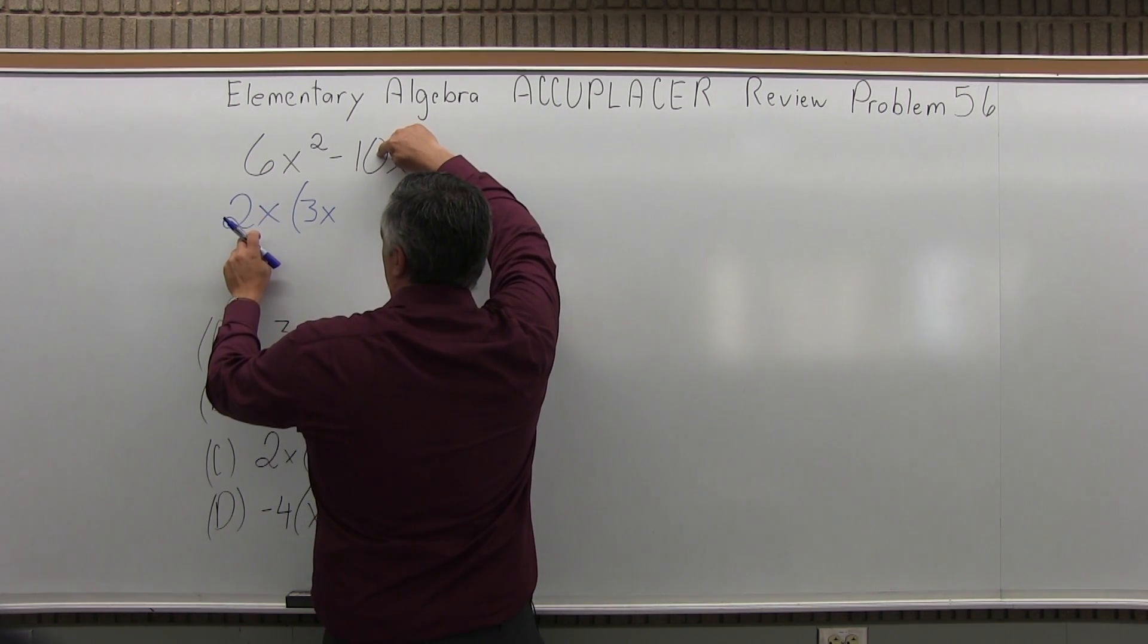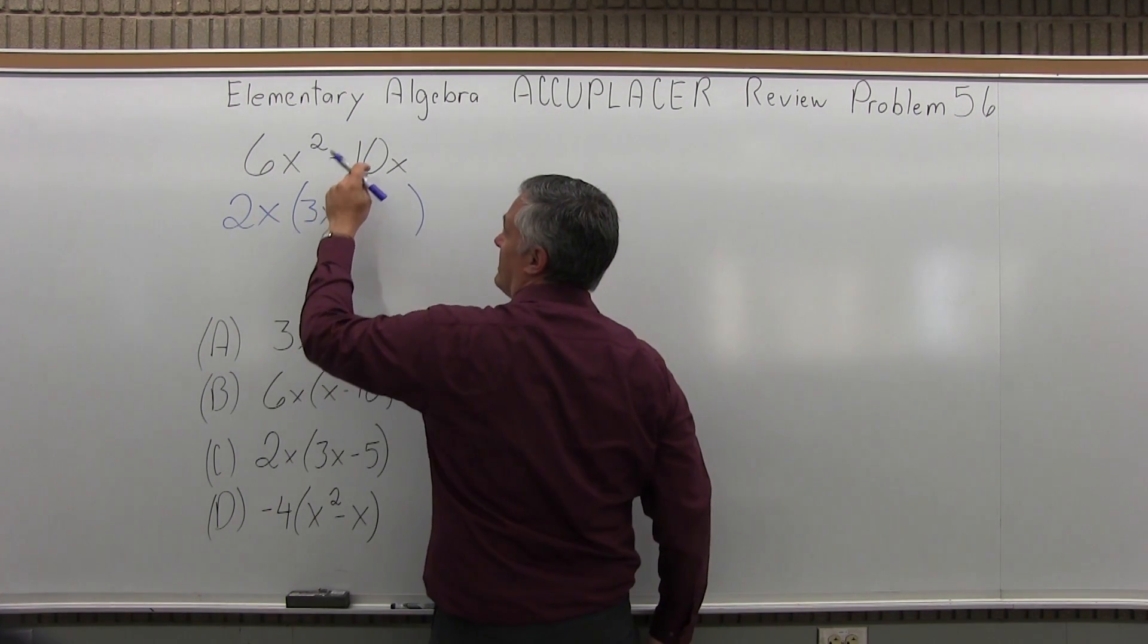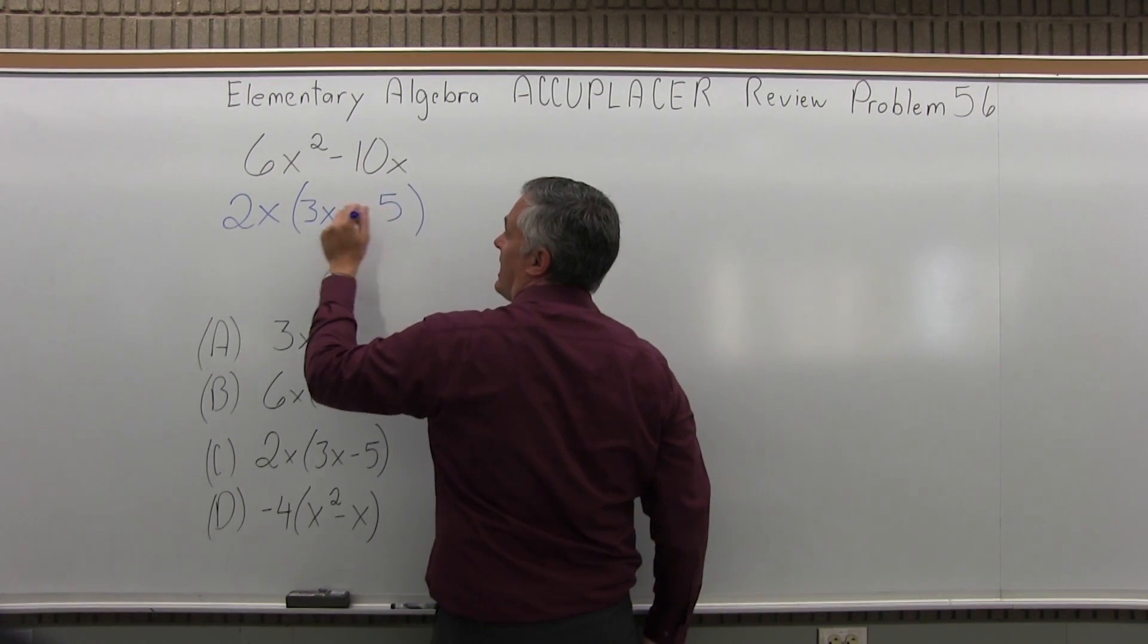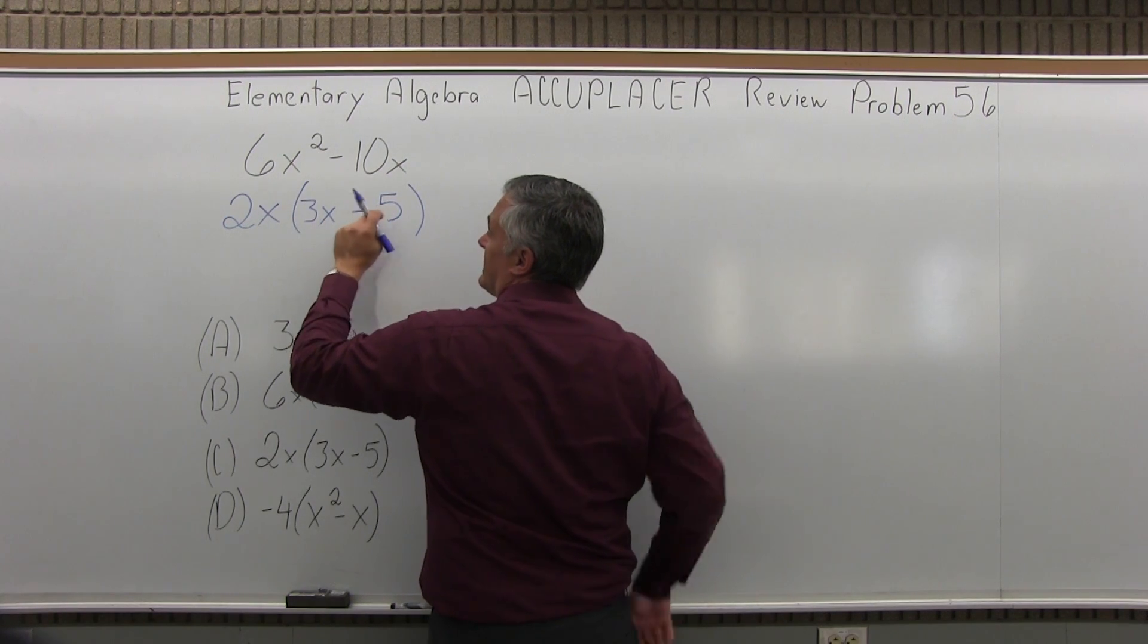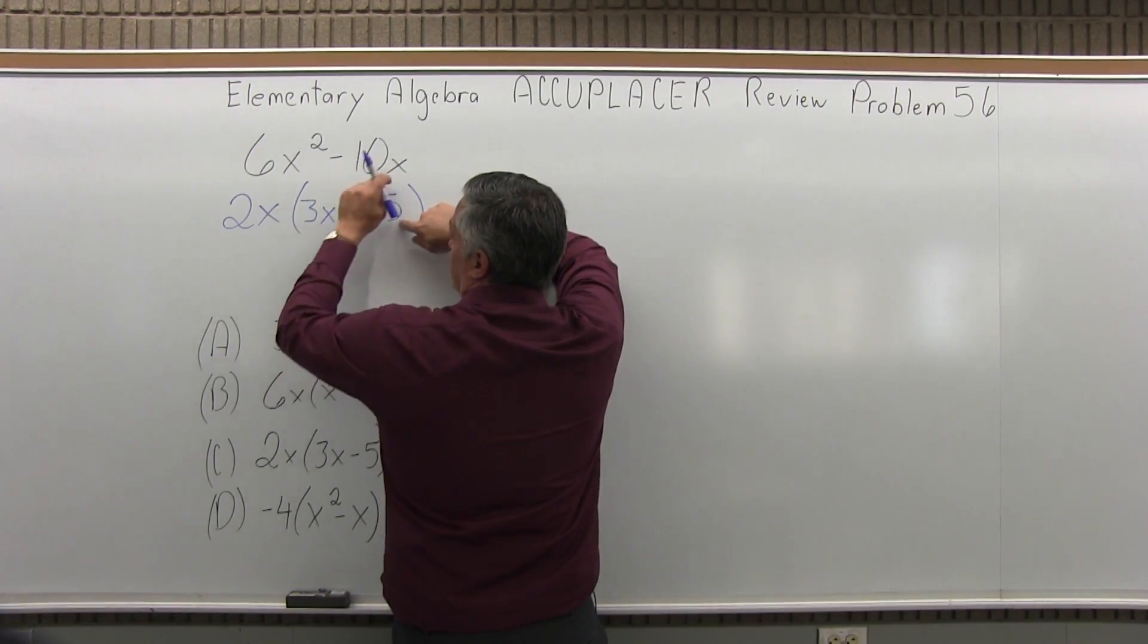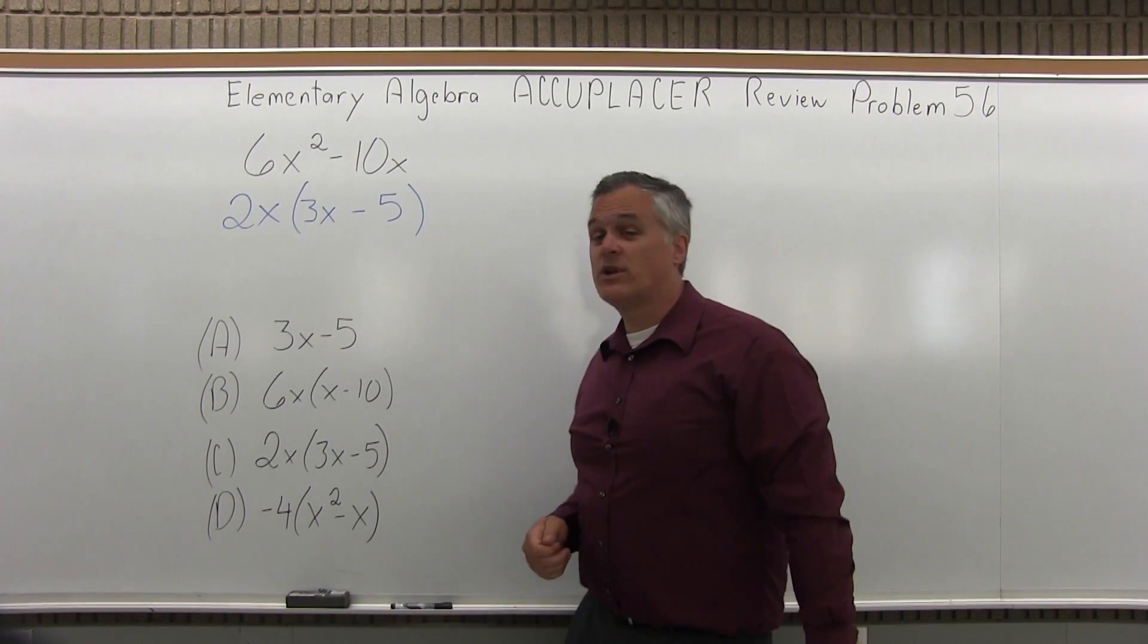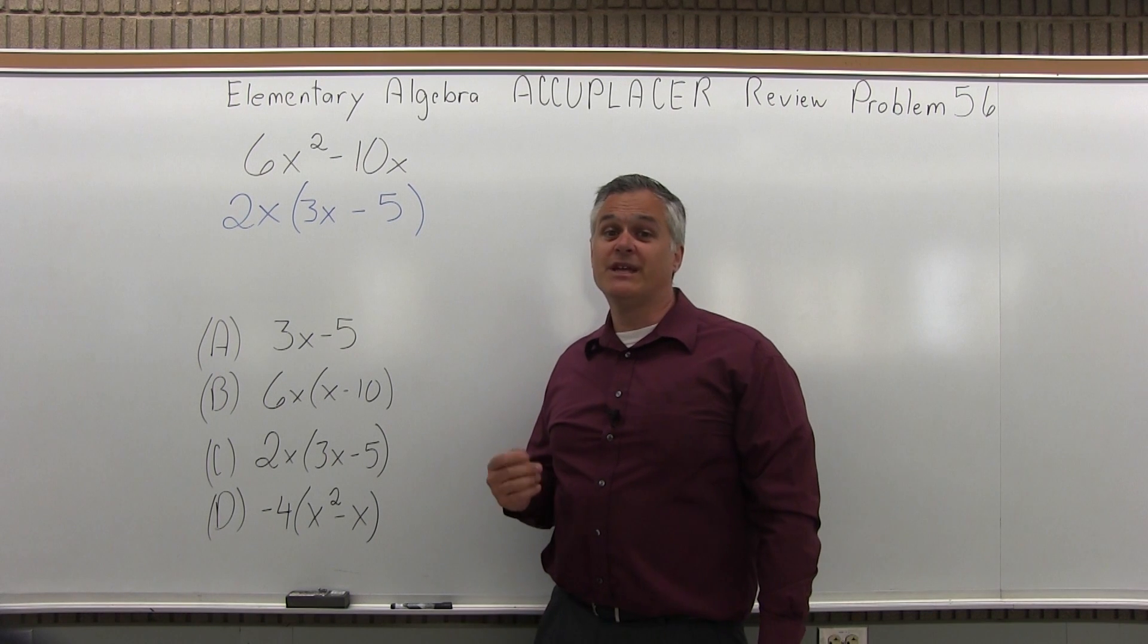2x times what is minus 10x? Well, pay attention to the sign, it will have to be negative, and it would be negative 5. 2x times negative 5, the 2 times negative 5 makes the negative 10, and the x comes in to pick up the x in the 10x. So I have 2x in front of the parentheses, 3x minus 5 inside the parentheses.